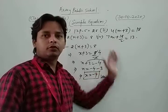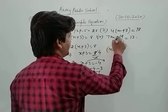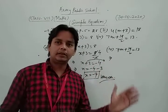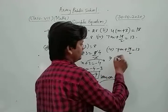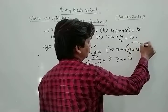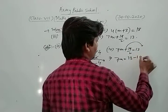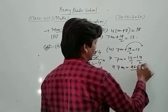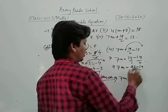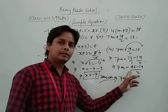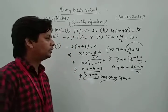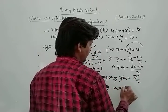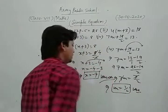We take and solve the fourth part: 7n plus 19 upon 2 is equal to 13. We separate variables and constants — 7n is equal to 13 minus 19 by 2. Taking LCM, that gives 26 minus 19 over 2, which is 7 upon 2. Since 7n and 7 cancel each other, the value of variable n is 1 by 2. This is our required solution.